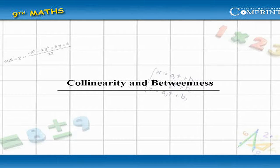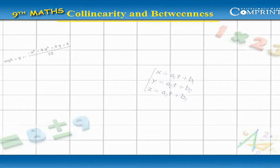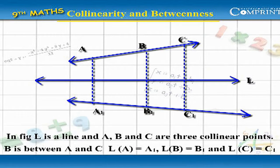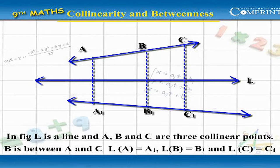Collinearity and betweenness. In the figure, L is a line and A, B and C are three collinear points. B is between A and C. L of A equals A1, L of B equals B1, and L of C equals C1.